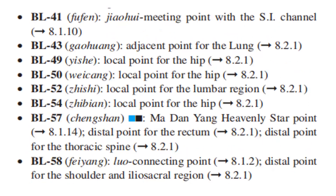Bladder 41 is the Jiao Wei meeting point with the Small Intestine Channel. Bladder 43 is the adjacent point for the lungs. Bladder 49 is the local point for the hip. Bladder 50 is the local point for the hip. Bladder 52 is the local point for the lumbar region. Bladder 54 is the local point for the hip.